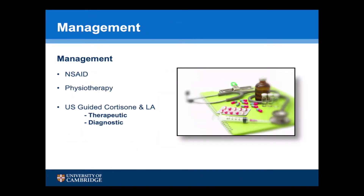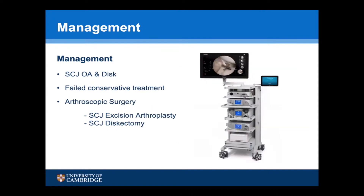In the vast majority of patients, the cause of their sternoclavicular joint pain is intra-articular. The first line of management should be non-steroidals coupled with physiotherapy. If this is unsuccessful, an ultrasound-guided cortisone injection is useful both therapeutically and diagnostically. For the group of patients with sternoclavicular joint osteoarthritis or disc tear that have failed conservative treatment, arthroscopic surgery is indicated — either an SCJ excision arthroplasty or an SCJ discectomy.